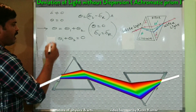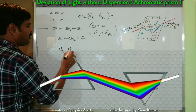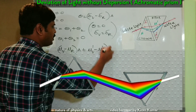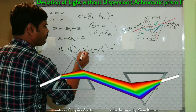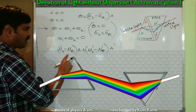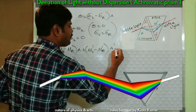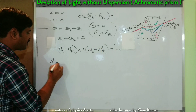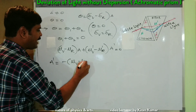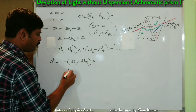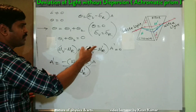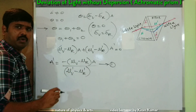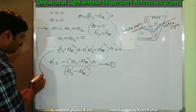Now, the θ formula is: (μᵥ − μᵣ) × A + θ₂ = (μᵥ' − μᵣ') × A' = 0. Here the first term is for the crown glass prism and the second term is for the flint glass prism. From this, A' = −(μᵥ − μᵣ) × A / (μᵥ' − μᵣ'). This is taken as equation one.